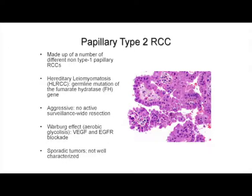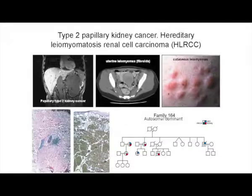Type 1 papillary is often mixed together in many studies with papillary type 2 cancer, but these are completely different — really different tumors. Papillary type 2 is made up of a number of different non-type 1 papillary cancers. From genetic studies, hereditary leiomyomatosis with germline mutation of the fumarate hydratase gene can be involved. This is an aggressive disease — nobody thinks about active surveillance until a 3-centimeter lesion. Wide resection is recommended, and this is a perfect example of where we can see the Warburg effect, where aerobic glycolysis comes into play.